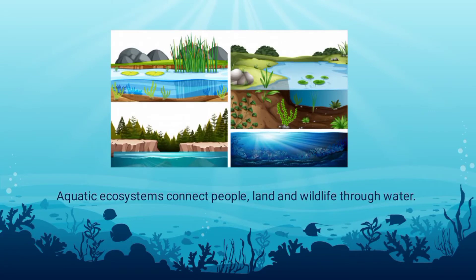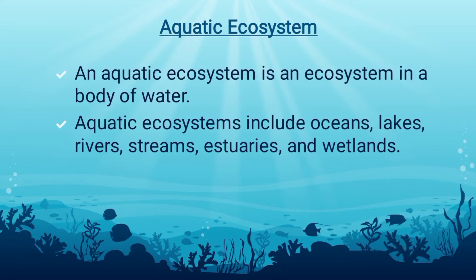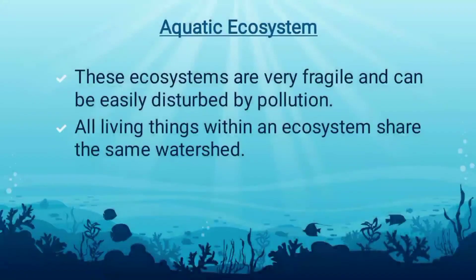Aquatic ecosystems connect people, land, and wildlife through water. An aquatic ecosystem is an ecosystem in a body of water. It includes oceans, lakes, rivers, streams, estuaries, and wetlands. Within these aquatic ecosystems are living things that depend on the water for survival, such as fish, plants, and microorganisms. These ecosystems are fragile and can be easily disturbed by pollution.